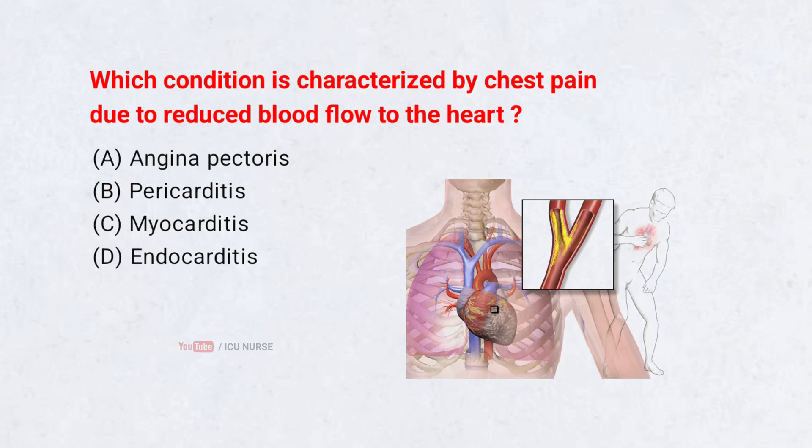Which condition is characterized by chest pain due to reduced blood flow to the heart? Correct answer A: Angina pectoris. Angina pectoris occurs when coronary blood supply is insufficient to meet myocardial oxygen demand.